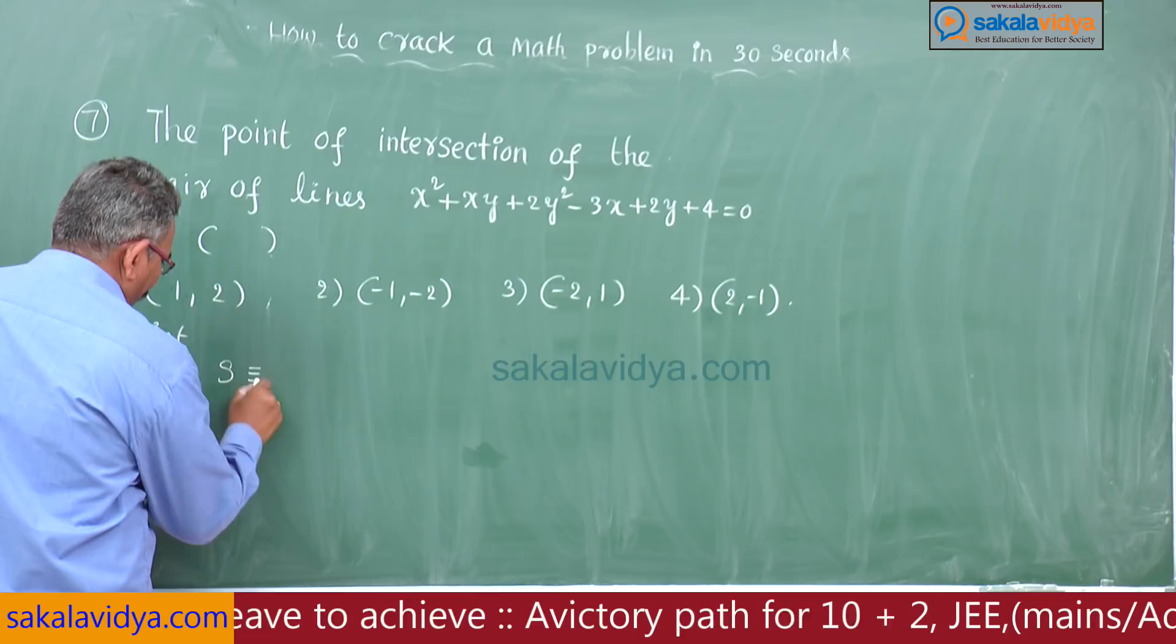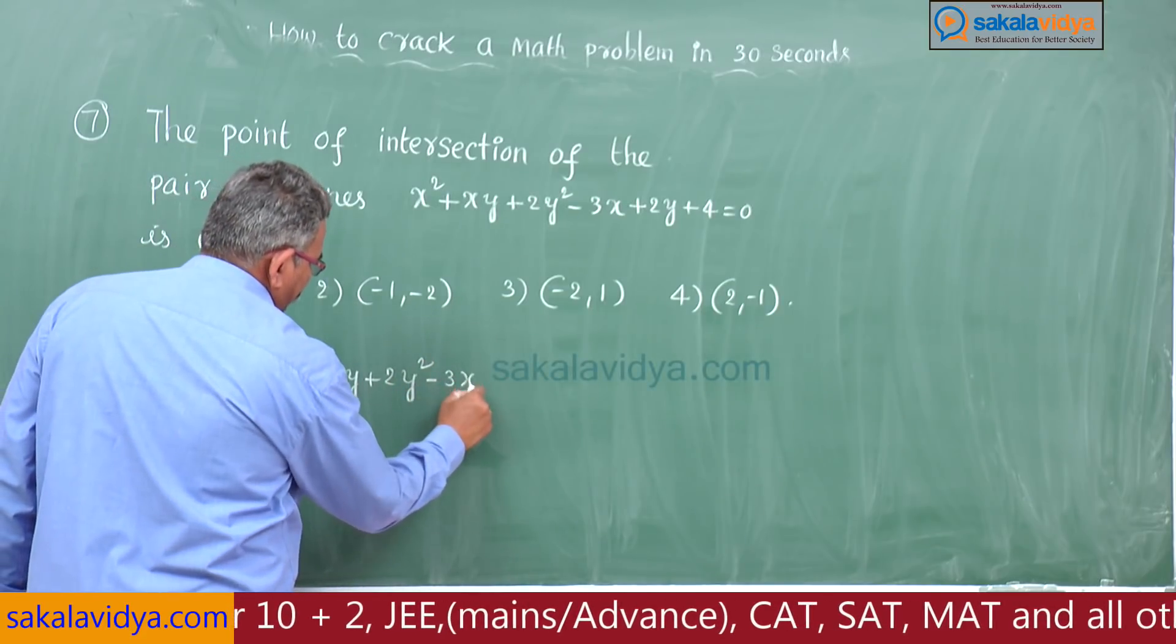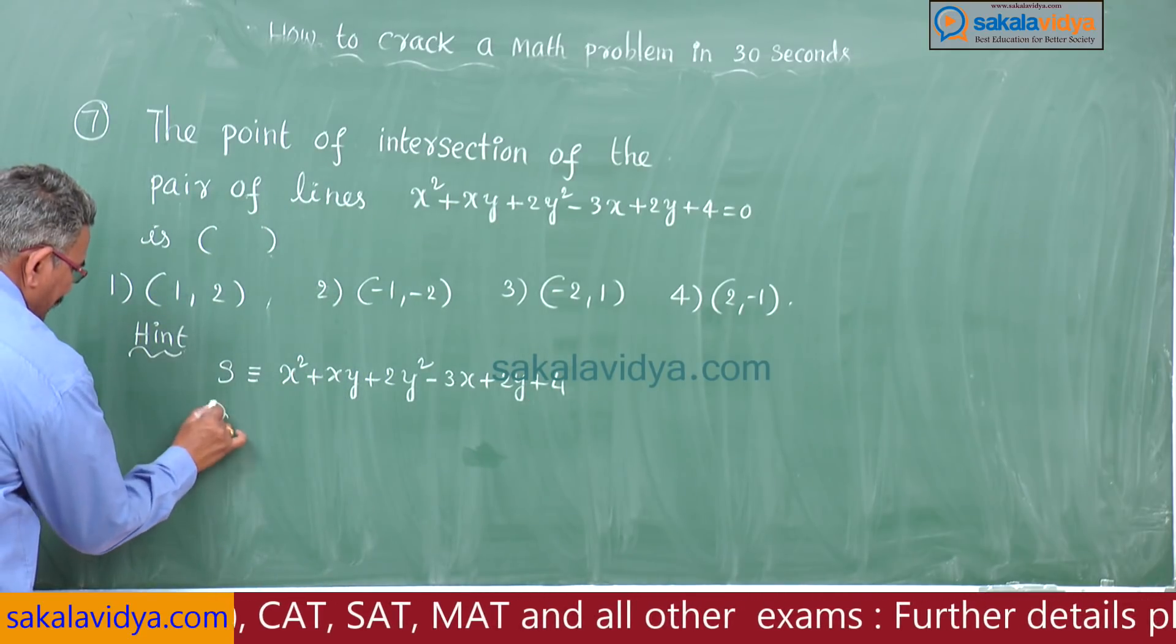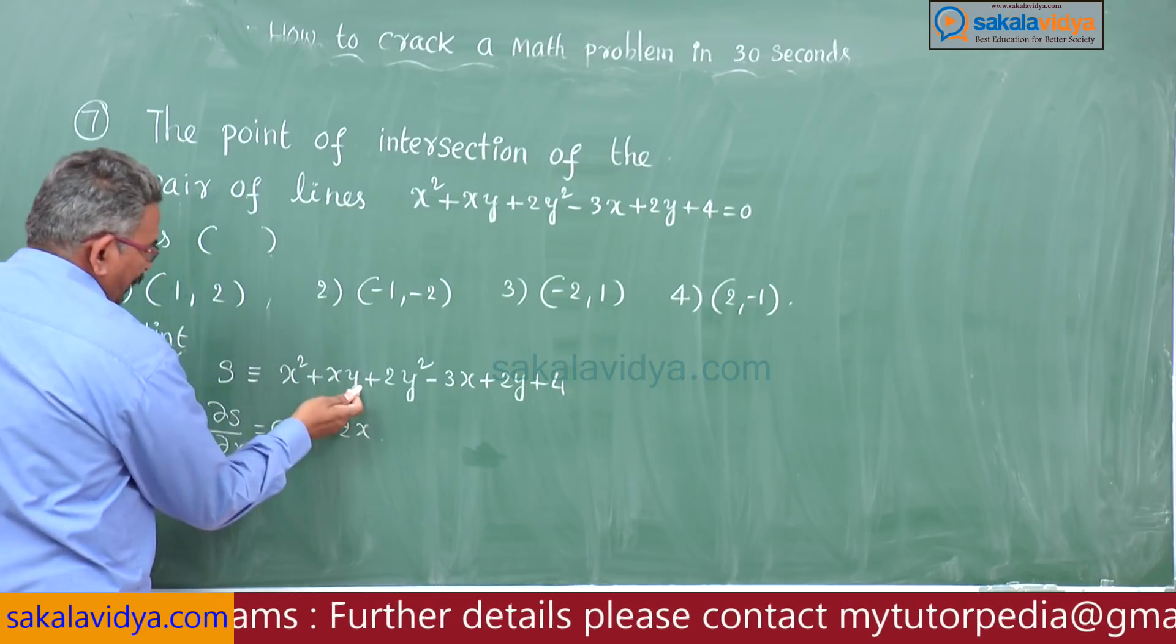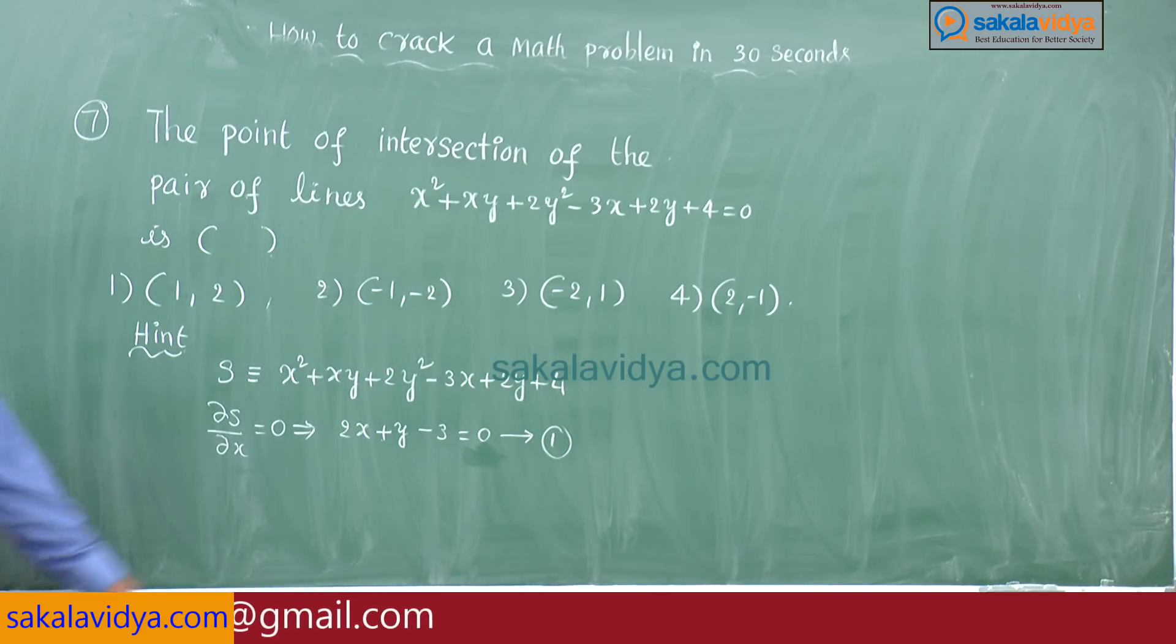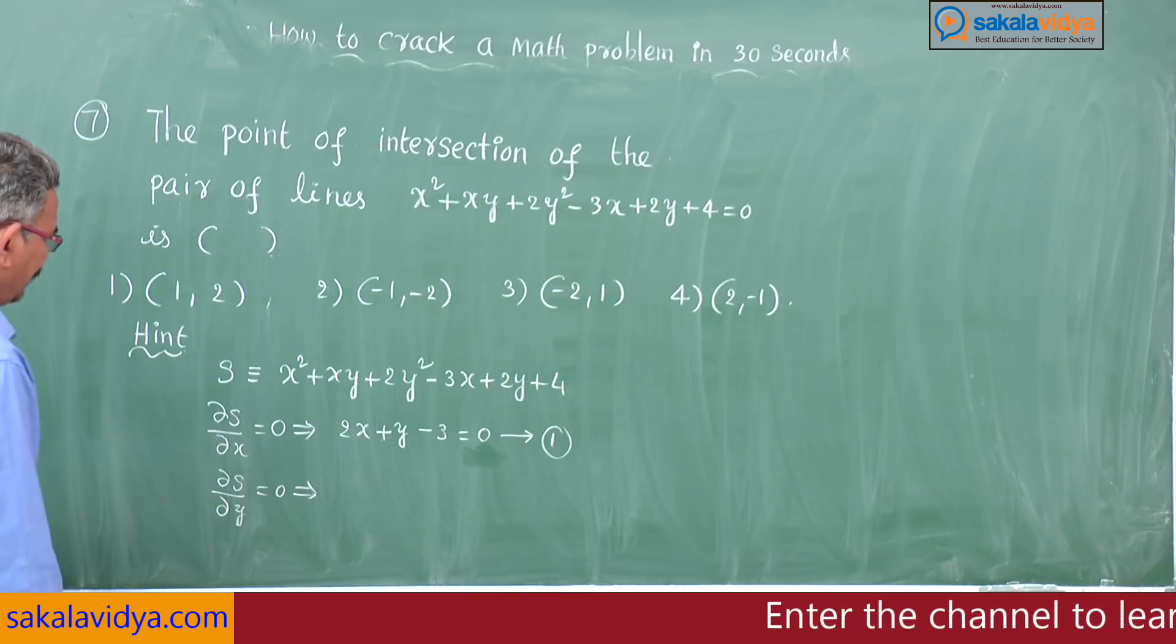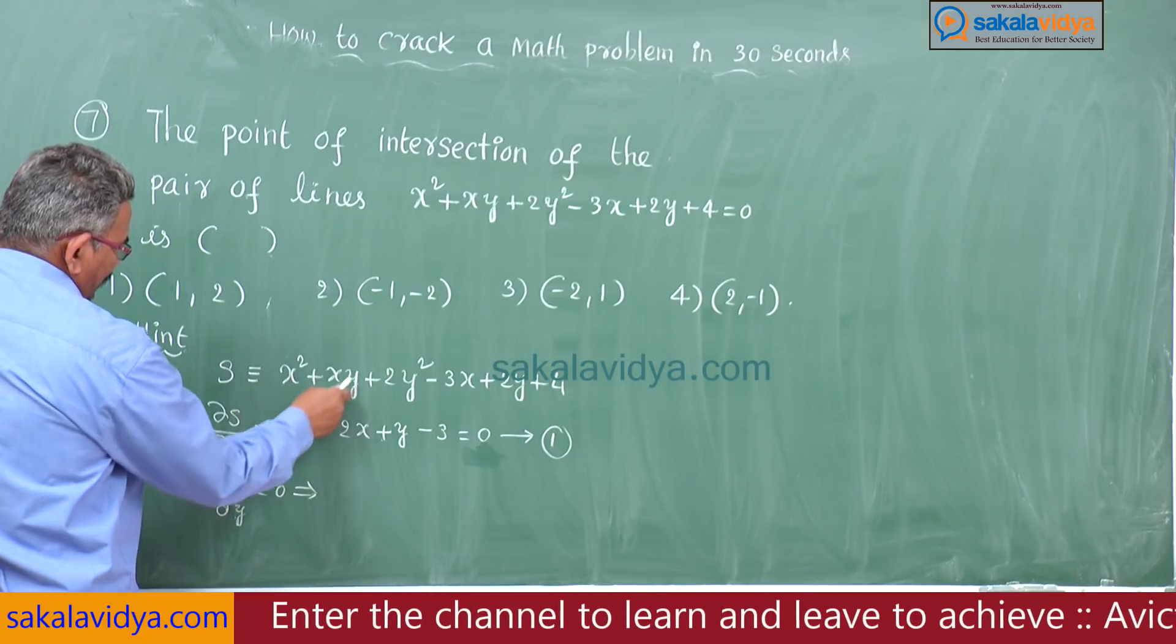Let S is equal to x square plus xy plus 2y square minus 3x plus 2y plus 4. First, ∂S/∂x is equal to 0. x square differentiation gives 2x, y is constant, plus xy differentiation gives y, plus 0 minus 3 is equal to 0. Therefore 2x plus y minus 3 is equal to 0.